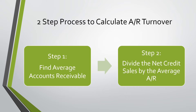It is a two-step process to calculate the accounts receivable turnover. Step one is to find the average accounts receivable. Step two is to divide the net credit sales by the average accounts receivable found in step one. This is further explained on the next slide.